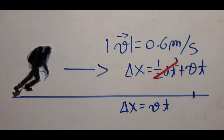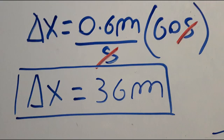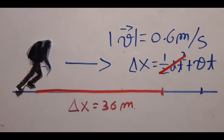Delta x equals 0.6 meters per second times 60 seconds, since one minute has 60 seconds. The seconds cancel out, and 0.6 times 60 gives us 36 meters. So the man travels 36 meters along the surface of the slope.